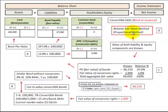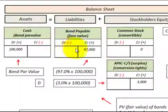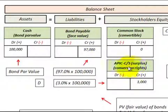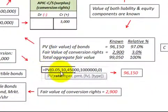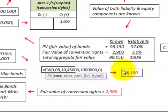Now let's look at the relative fair value method, or proportional method, using the same example. In this case, we have a known value for the debt portion of those convertible bonds and we also know the equity value of the conversion rights. Using the similar bond without a conversion feature, we determined that bond would be worth $96,150. The fair value of the conversion rights is $2,900 — that's their market value.